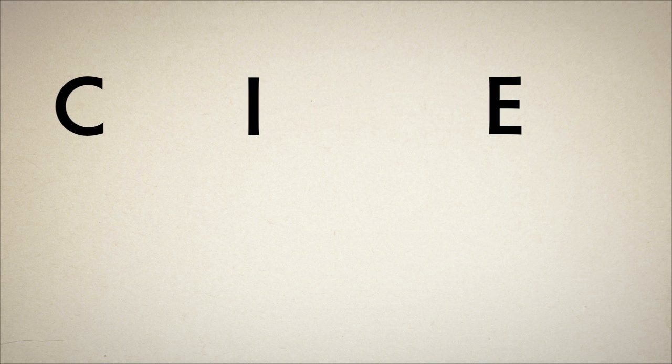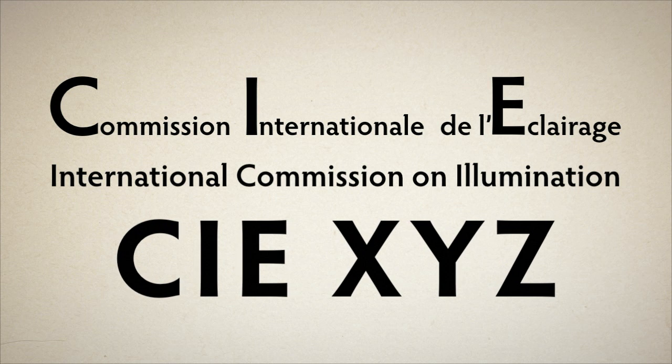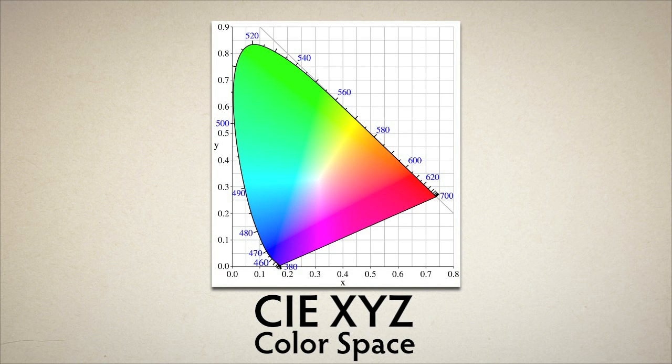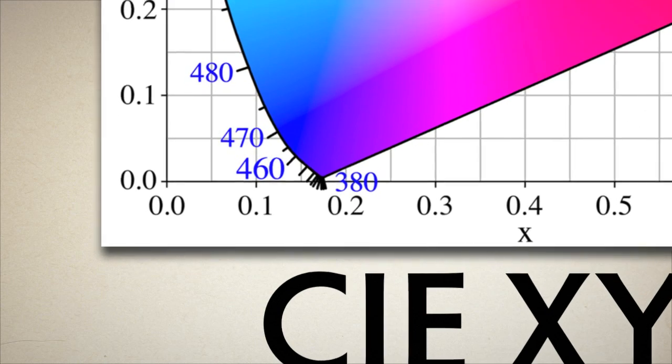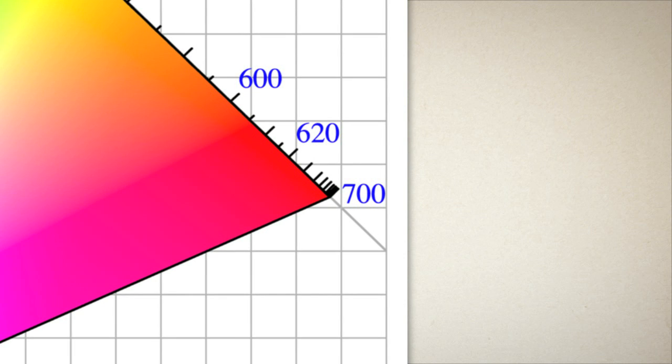In 1931, an international organization called CIE, which in French means International Commission on Illumination, defined the CIEXYZ color space, based on all the colors humans can see. They made the now famous horseshoe or tongue shape diagram most of us have probably seen. If you look closely at official CIEXYZ diagrams, you can see wavelength measurements all along the edge of the horseshoe, from 380 nm for violet, all the way around to 700 nm for red.